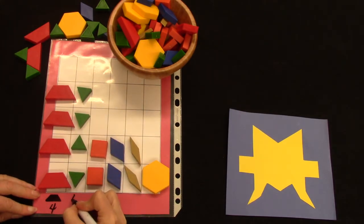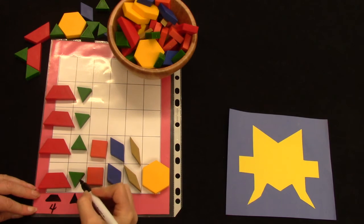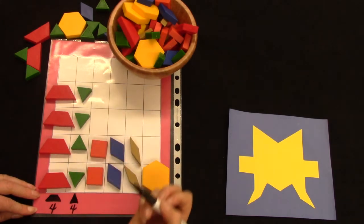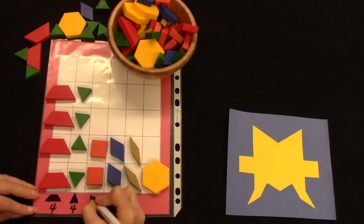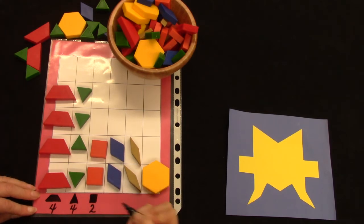Next, I have my triangles. Triangles have three sides. One, two, three, and three angles. I have four. One, two, three, four triangles. How many squares do I have? Yes, you're right. I have two, so I'm going to write down two.